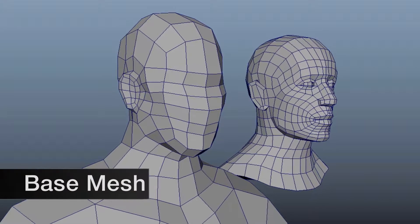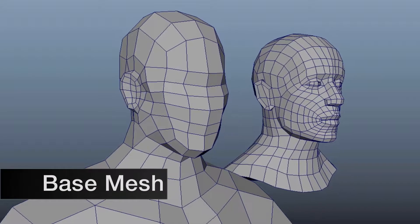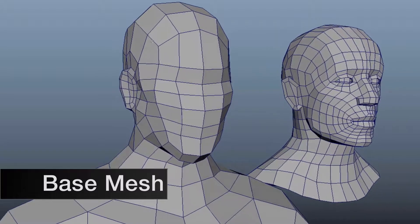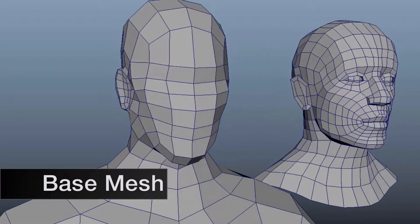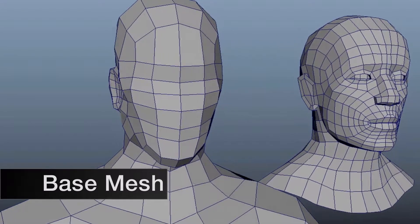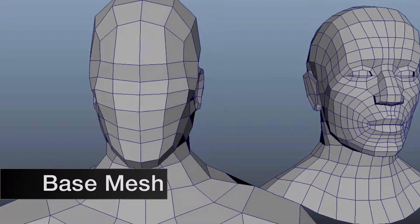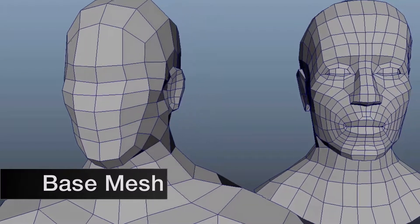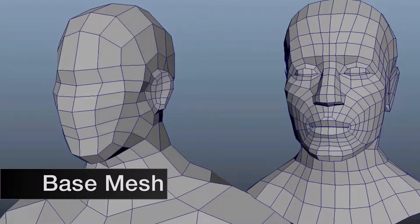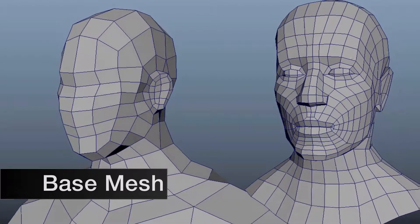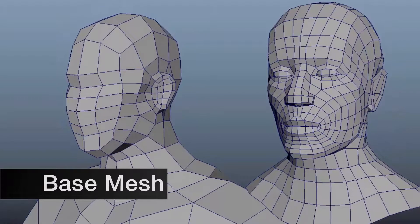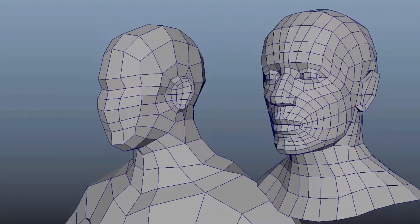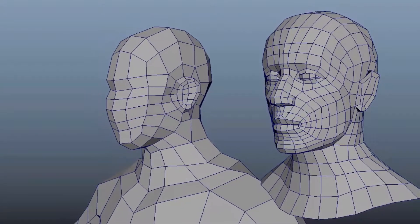The next step is to make a base mesh of the character. The base mesh is essentially a low-res, uncompleted model of the character. During this process, the base mesh is created with all quads as possible to avoid five edges running into each other, called poles. If these are present, it could cause pinching in the model when sculpting.